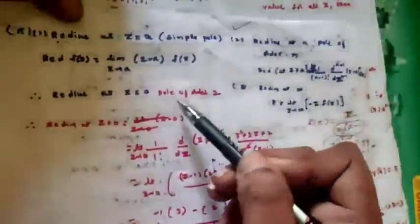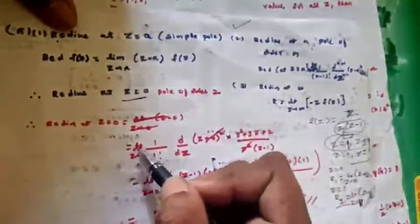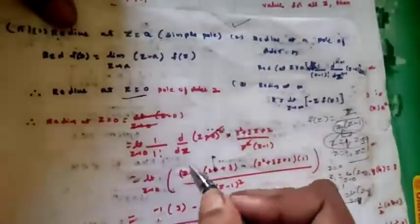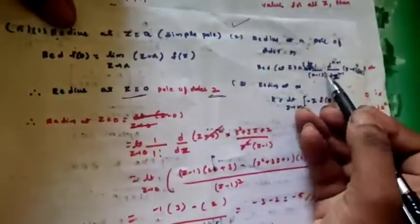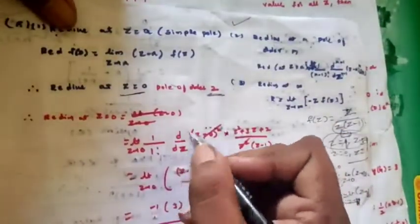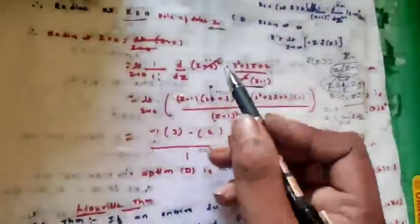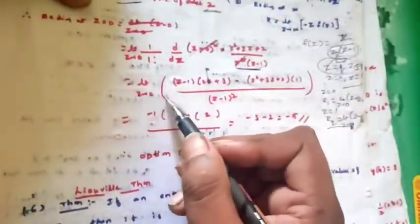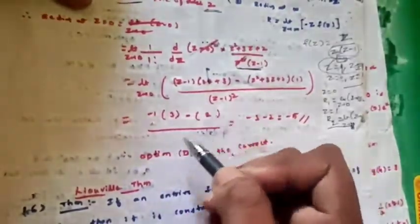With n = 2, we compute 1/1! · d/dz of z²·f(z), which cancels z² with the denominator. Using the quotient rule to differentiate (z²+3z+2)/(z-1) and applying the limit as z→0, substituting z = 0 gives (-3-2)/1 = -5. The answer is -5, so option D is correct.